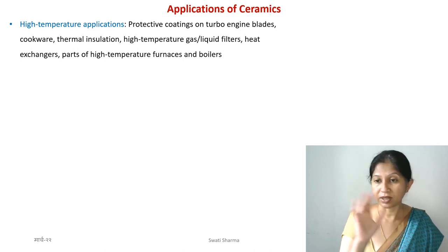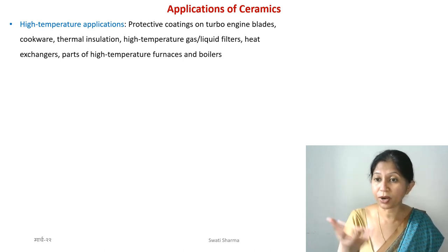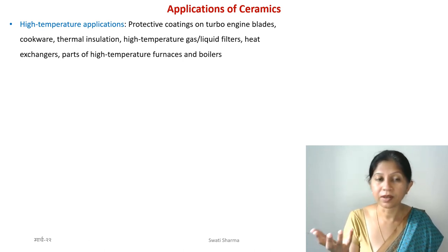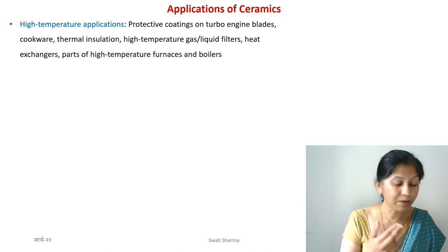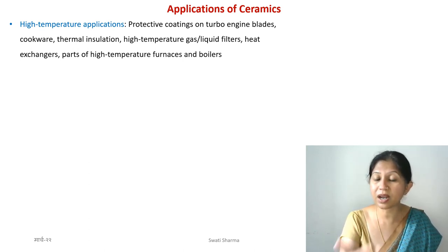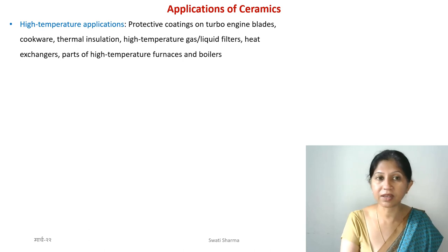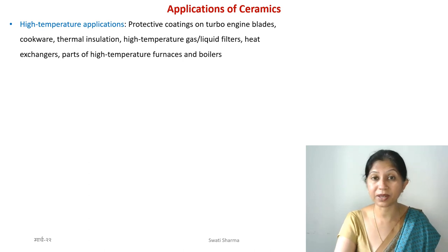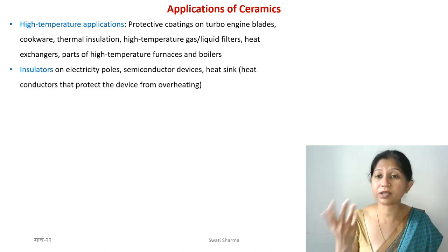Ceramics are very good conductors of heat and they protect the metal inside from being overheated and from getting cracks. So ceramic coatings and ceramic materials in general are very useful in high-temperature applications. Other high-temperature uses include protective coatings on cookware — pressure cookers, for example, sometimes have colorful ceramic coatings. You can also use ceramics in the lab as gas or liquid filters, and in heat exchangers and boilers in industries.